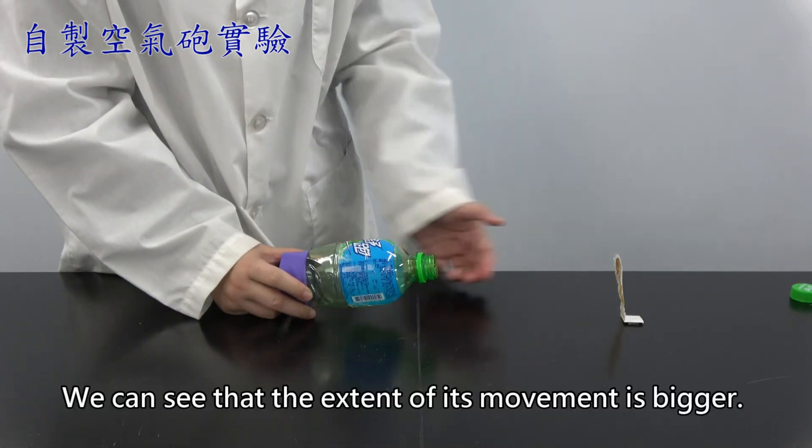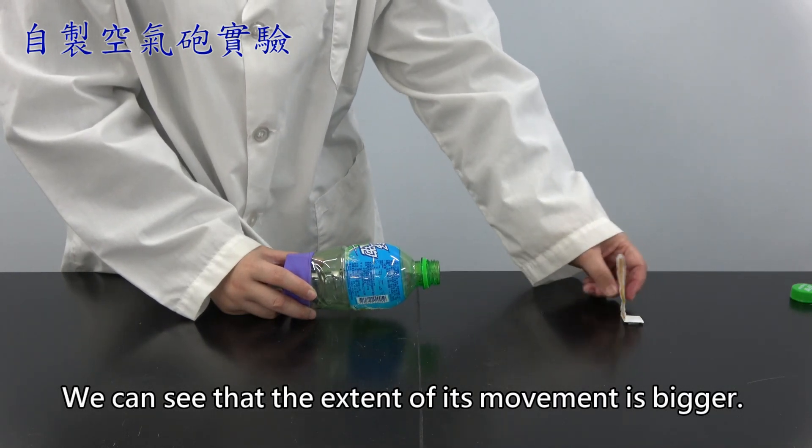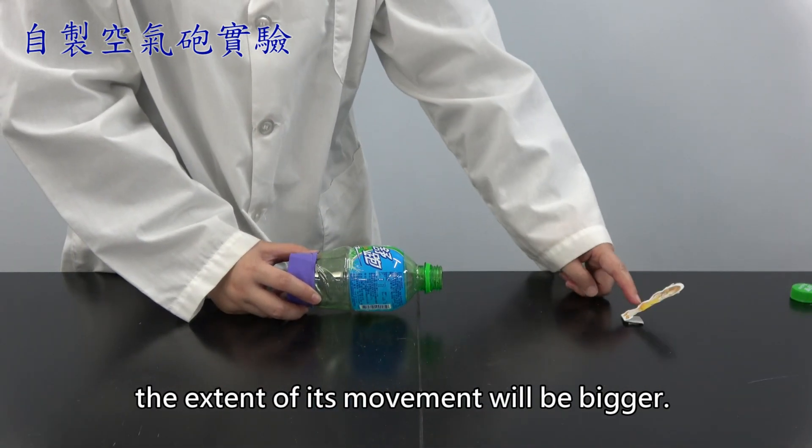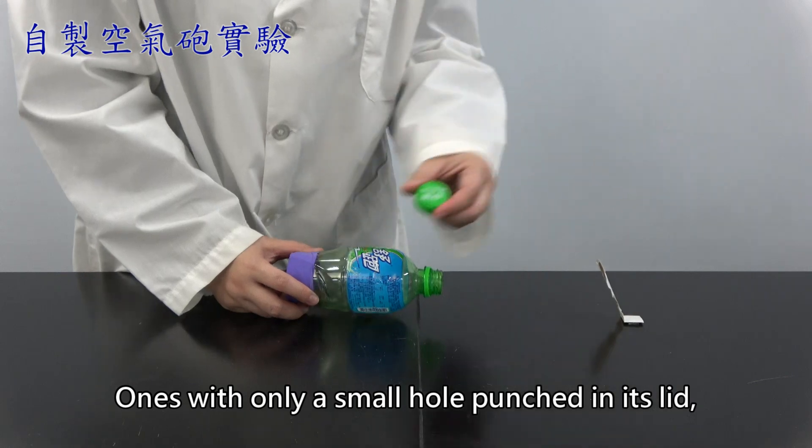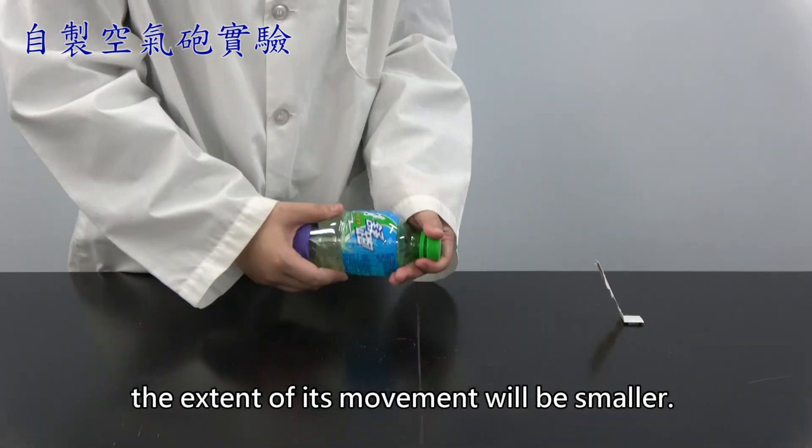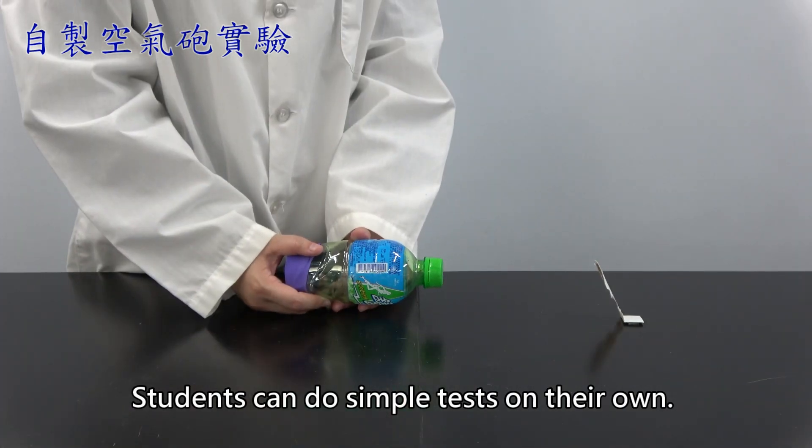Aim at the paper doll and fire. Fire! We can see that the extent of its movement is bigger. So, if the mouth of the bottle is bigger, the extent of its movement will be bigger. Once with only a small hole punched in its lid, the extent of its movement will be smaller. Students can do simple tests on their own.